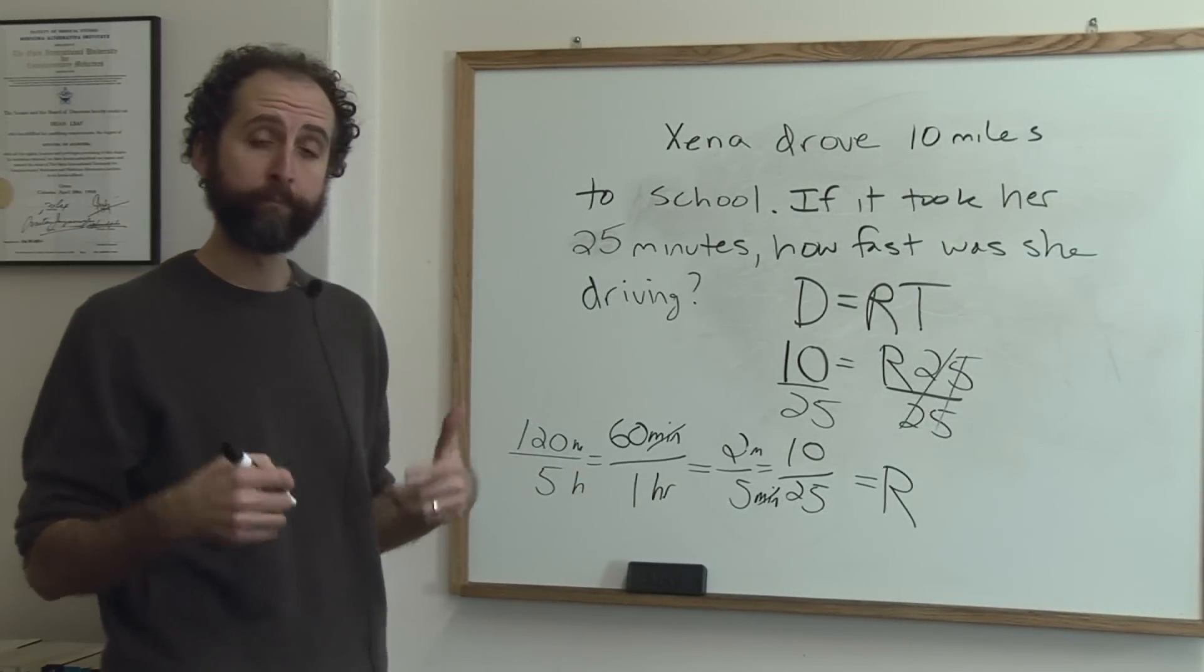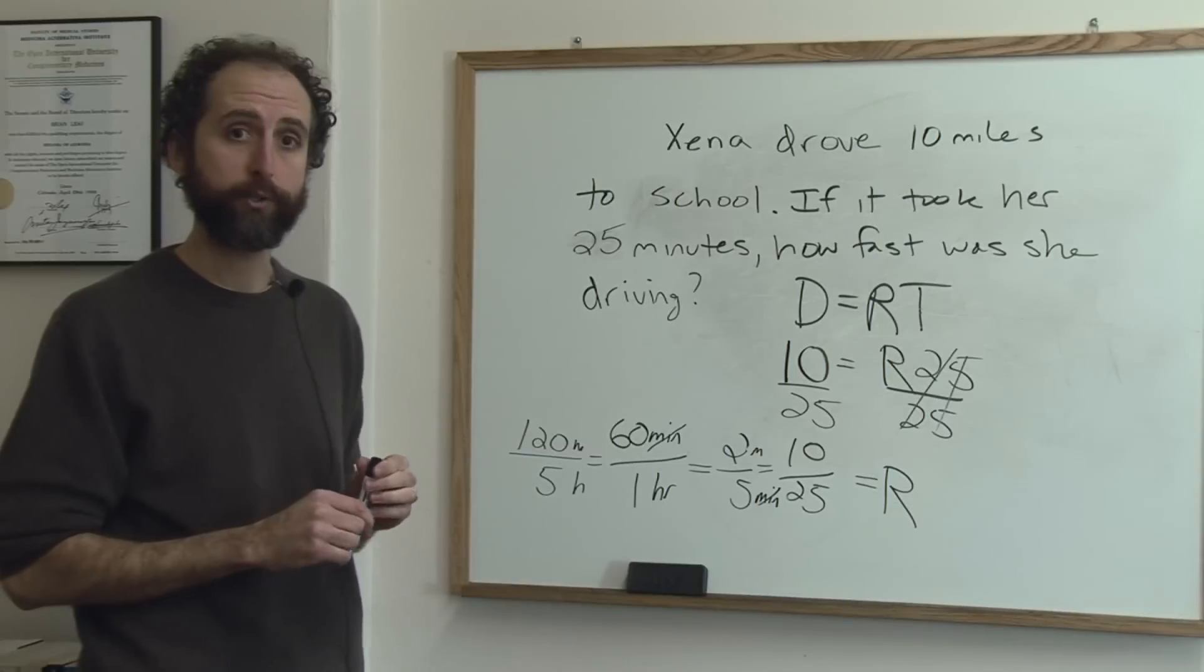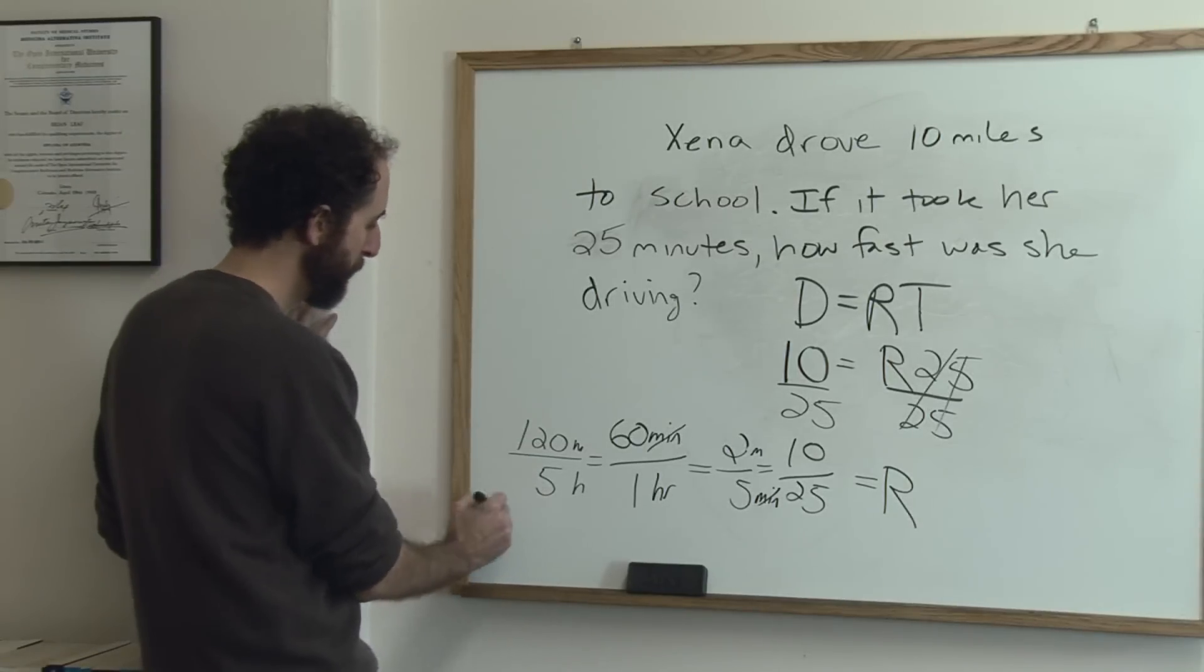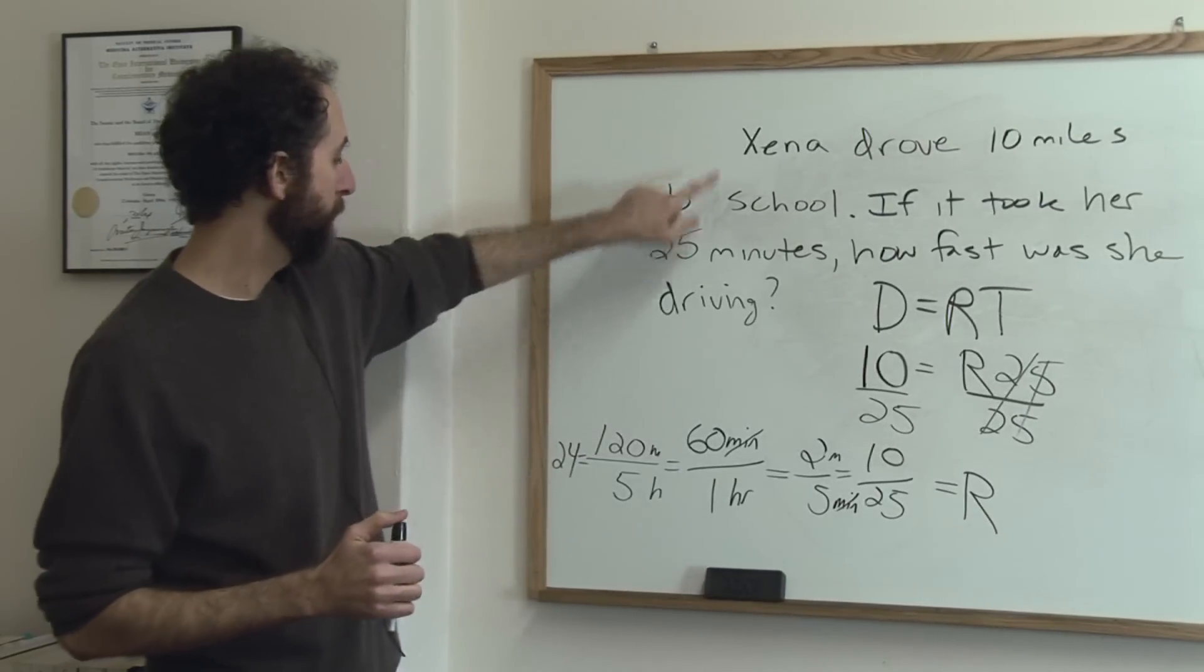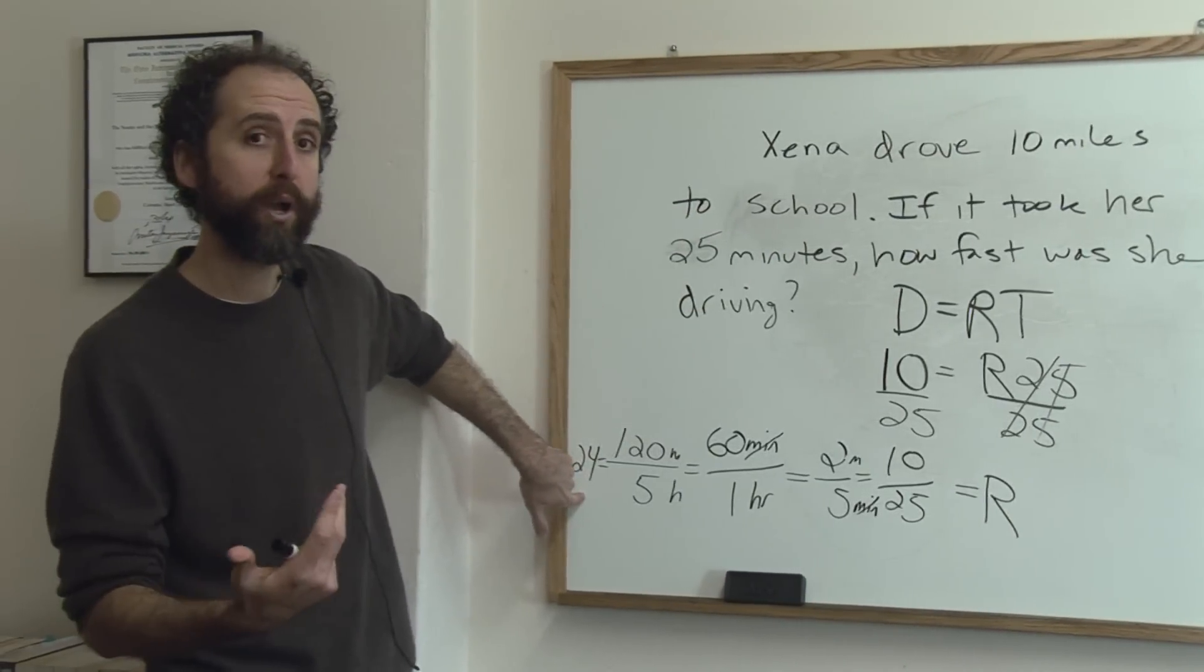So we have 120 miles per hour. As always, if you can reduce a fraction, you should. 120 divided by 5 is 24 miles per hour. So Zena drove 24 miles per hour to school.